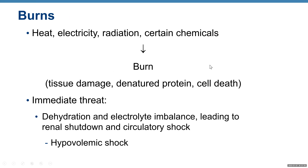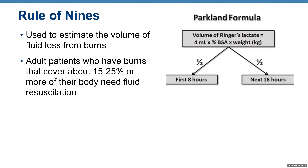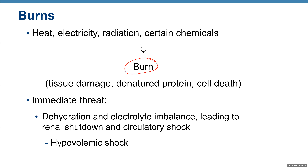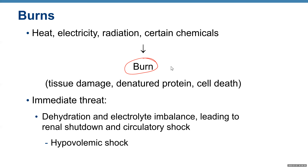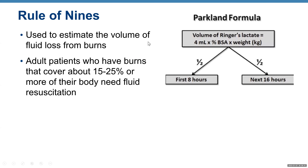Burns: heat, electrical radiation, or certain chemicals can damage tissue — denature proteins — leading to cell death. This is called a burn. The immediate threat is dehydration and electrolyte imbalance, leading to renal shutdown and circulatory shock. A specific type of shock due to dehydration is called hypovolemic shock — when you have a low volume of blood in your body. When somebody is admitted to the emergency room with a burn, it's important to estimate the amount of area affected. We use the rule of nines to estimate the volume of fluid loss from burns.